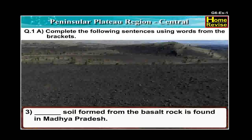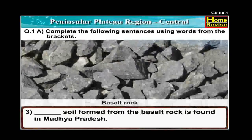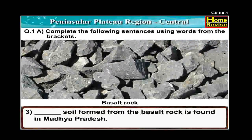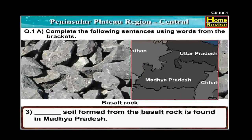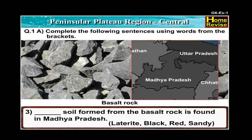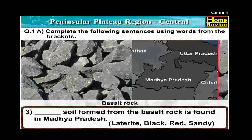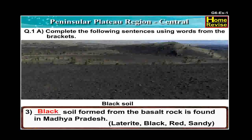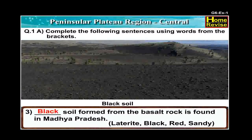Number 3: Dash soil formed from the basalt rock is found in Madhya Pradesh. The options are Laterite, Black, Red and Sandy. The answer is: Black soil formed from the basalt rock is found in Madhya Pradesh.